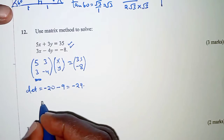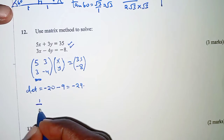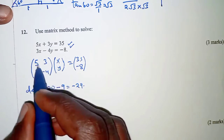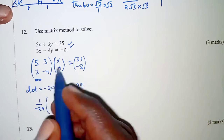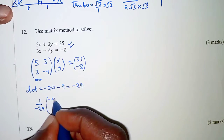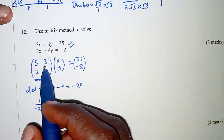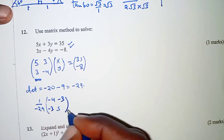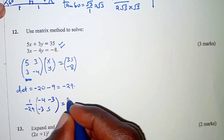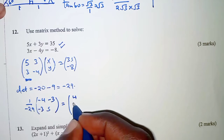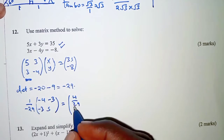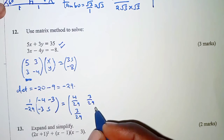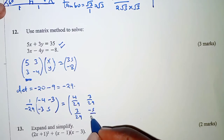Therefore, the inverse is obtained by having 1 over the determinant. For this diagonal, 5 and negative 4 interchange, so we have negative 4 and 5. In the other diagonal, we negate the elements. So finally this gives us 4 over 29, 3 over 29, 3 over 29, and negative 5 over 29.